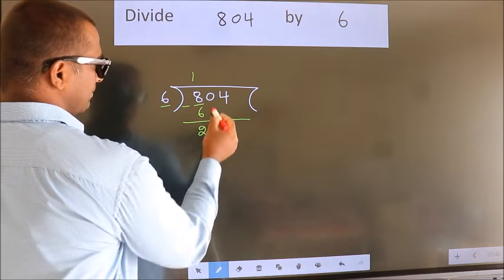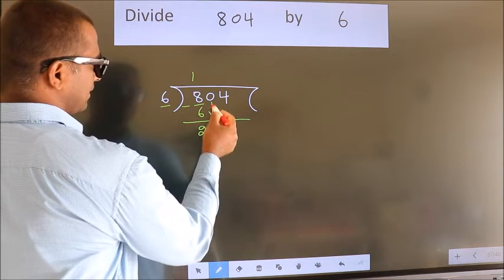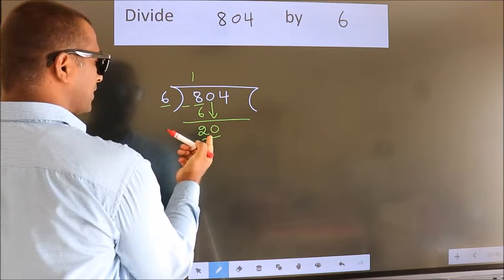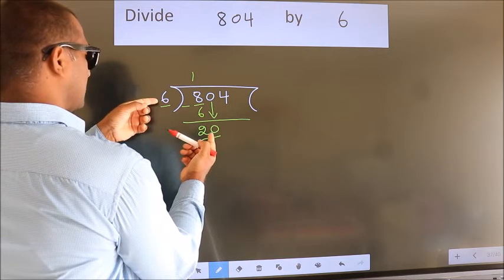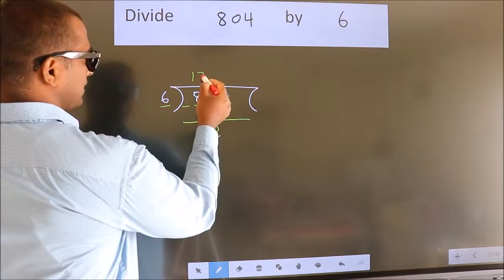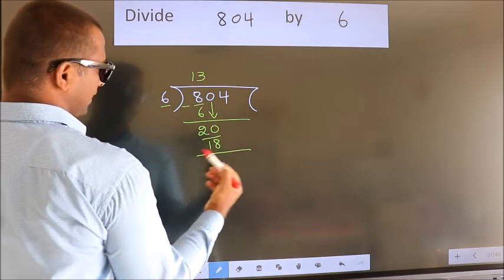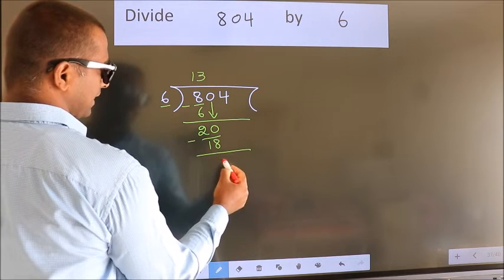After this, bring down the beside number. So 0 down. So 20. A number close to 20 in 6 table is 6 times 3 is 18. Now we subtract. We get 2.